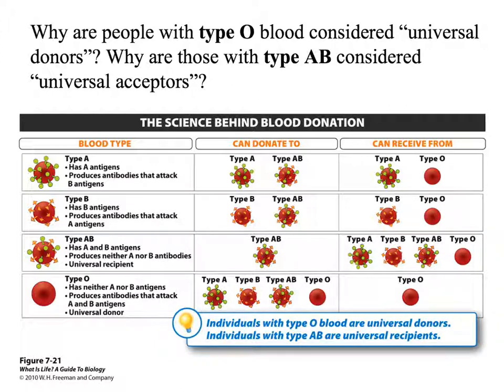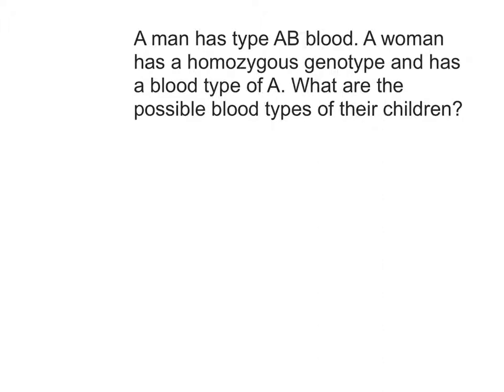Let's get down to some practice. We're going to do a few genetics problems looking at blood types. Blood types in humans are an example of both codominance and multiple alleles. There are three alleles possible: A, B, and O. A and B are both dominant or codominant together, and O is our true recessive.